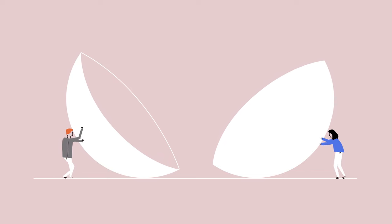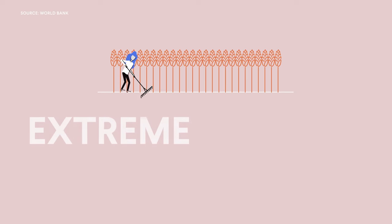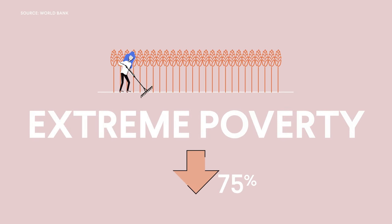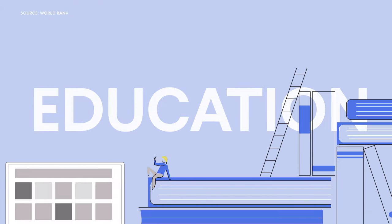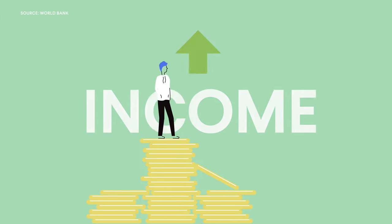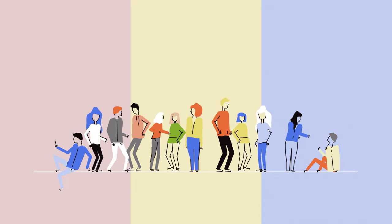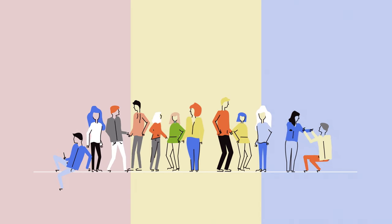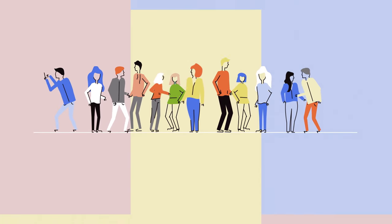Overall, the world has improved dramatically over the past 40 years. Extreme poverty has decreased by 75%. The number of students going to school has increased by nearly 50%. And the average income has quadrupled. But there are plenty of ways for the world to further develop and for every country to become a better place to live.